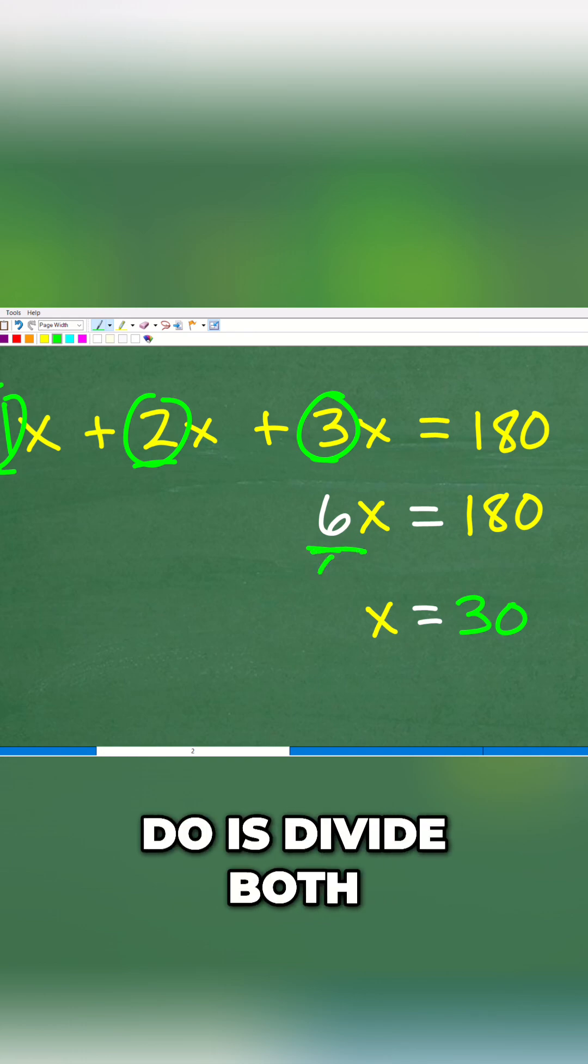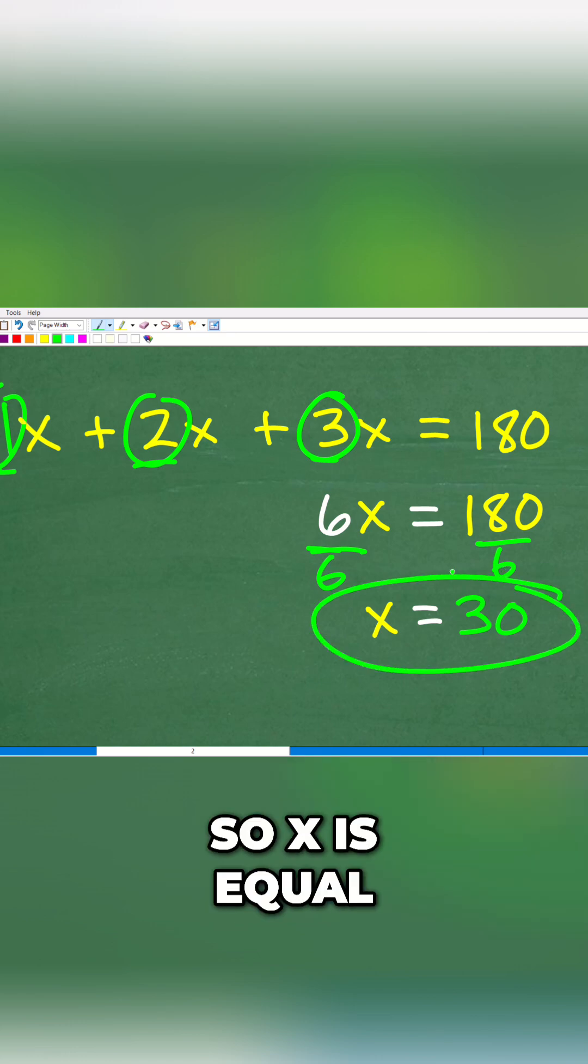To solve for x, all we have to do is divide both sides of the equation by 6, so x is equal to 30.